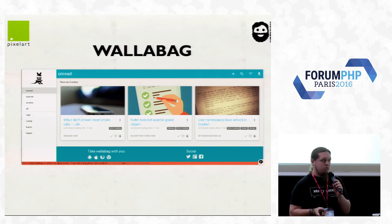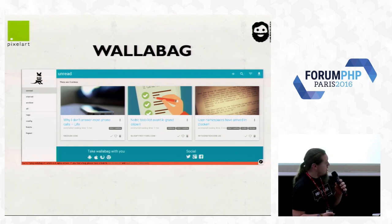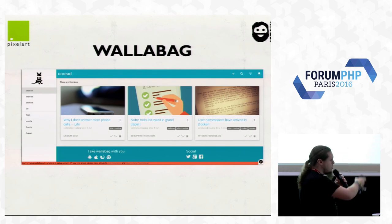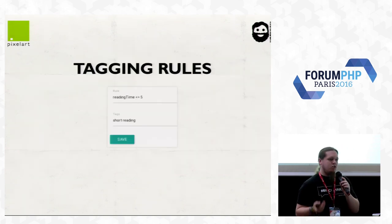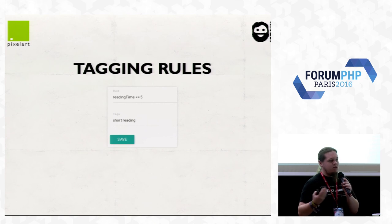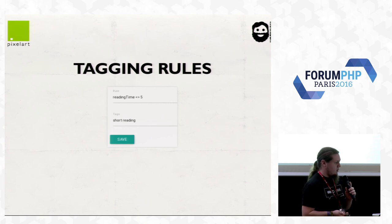Like Wallabag does — it's a tool to collect all your links to read later. You can tag them, and those tags can be defined with Rulers rules. For example, the short-reading tag has the rule: reading_time <= 5. So anyone using Wallabag defines their own rules, and it's used by Rulers in the backend. That's really cool.